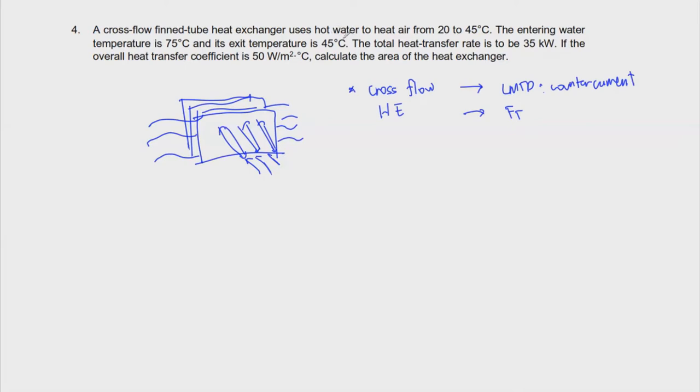It says here that it uses hot water to heat air from 20 to 45 degrees Celsius. We have hot water entering at THI = 75°C, and exiting at THO = 45°C. This is for water. Then for the cold air, we have TCI = 20°C and TCO = 45°C. This is air.